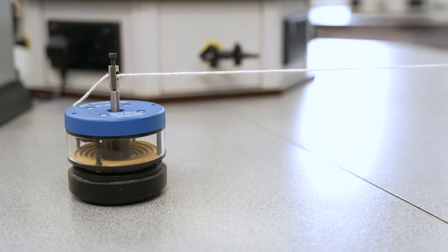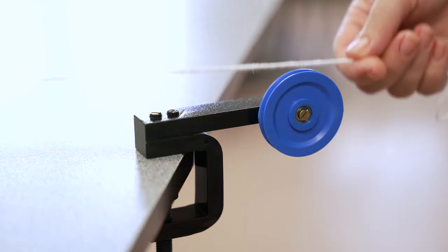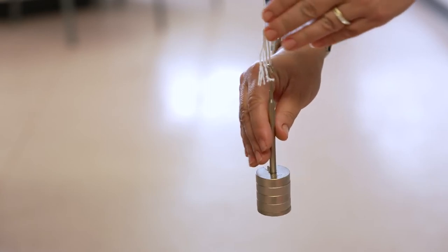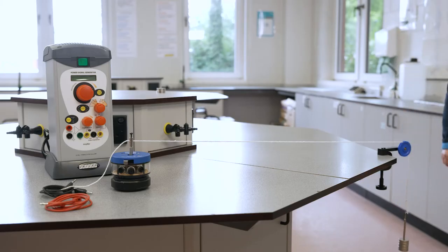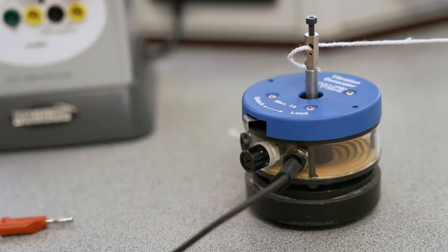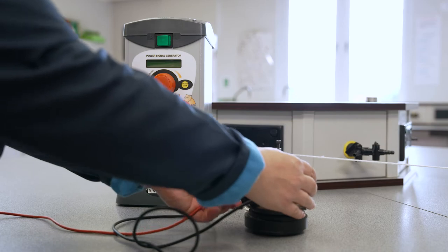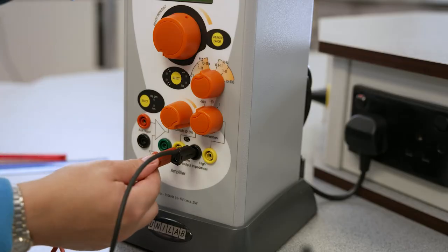Extend the string so that it goes over the pulley and attach the hanging masses to the string to add tension. Using the 4mm leads, connect the vibration generator to the power signal generator using the low impedance sockets on the power signal generator.